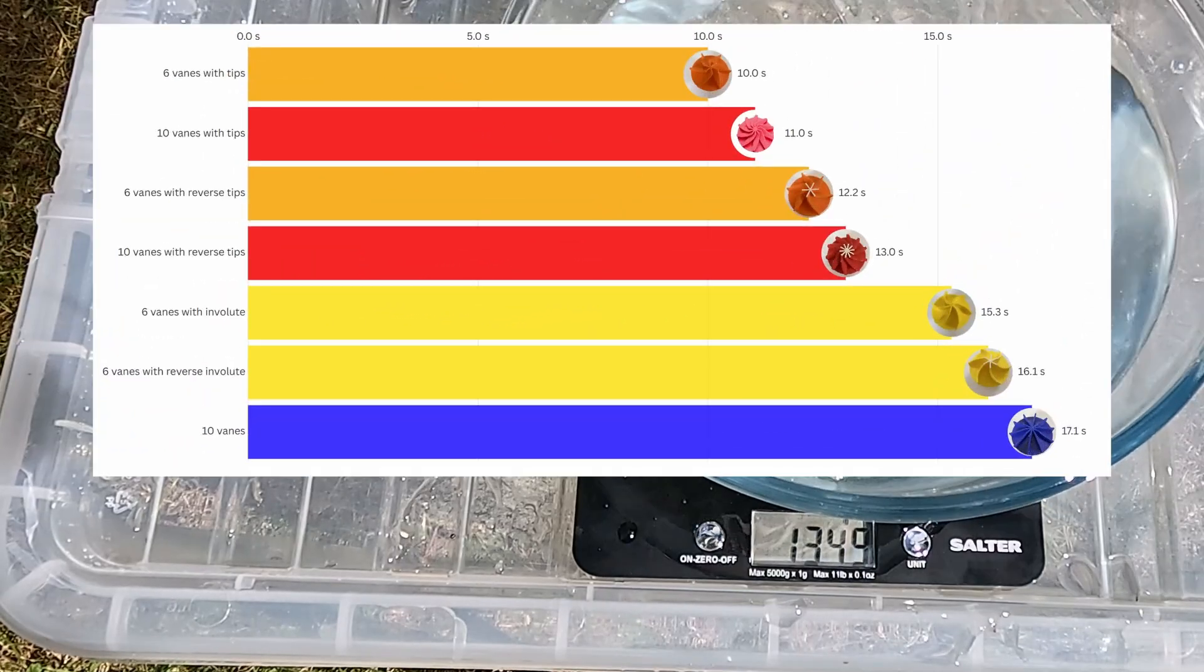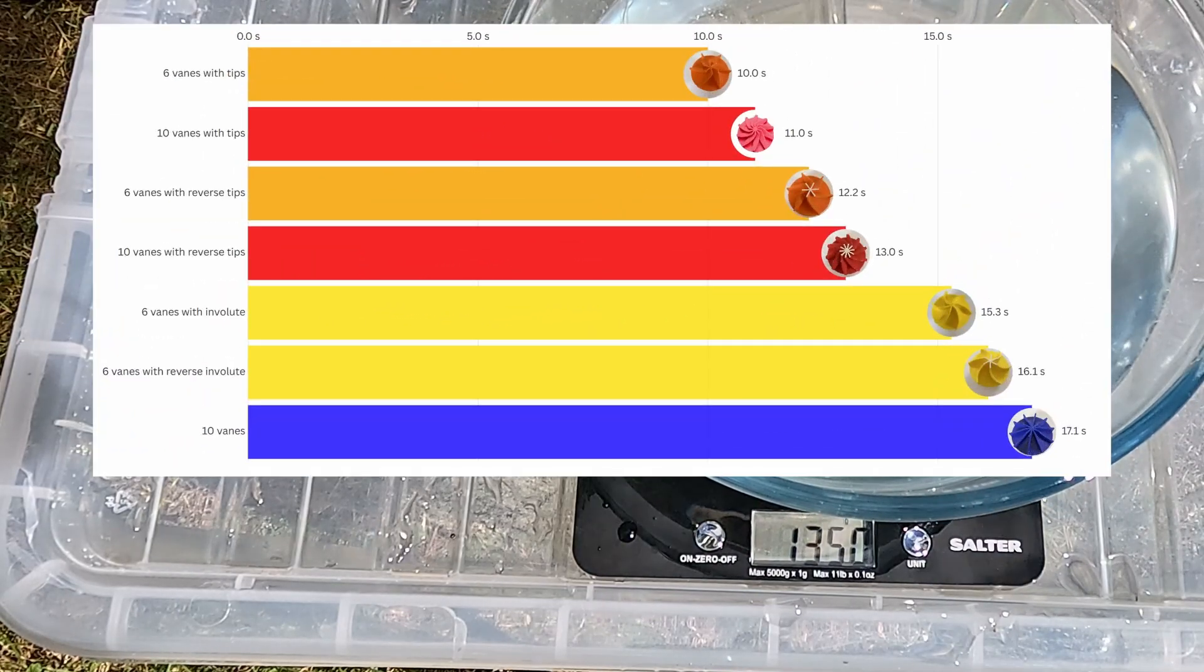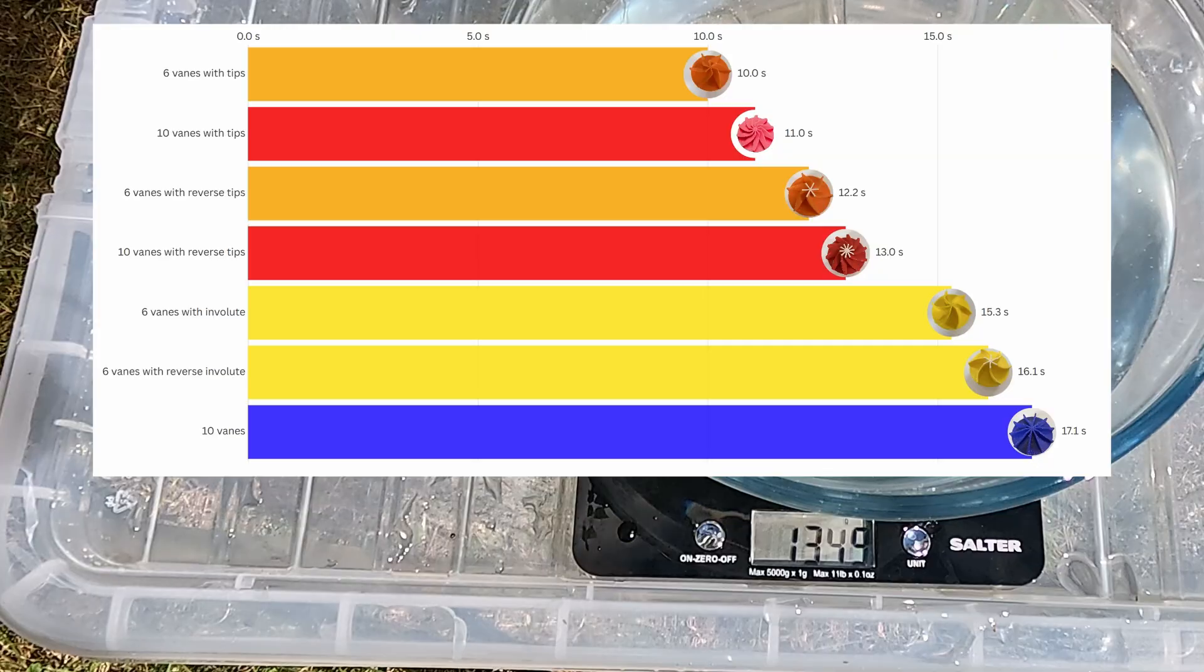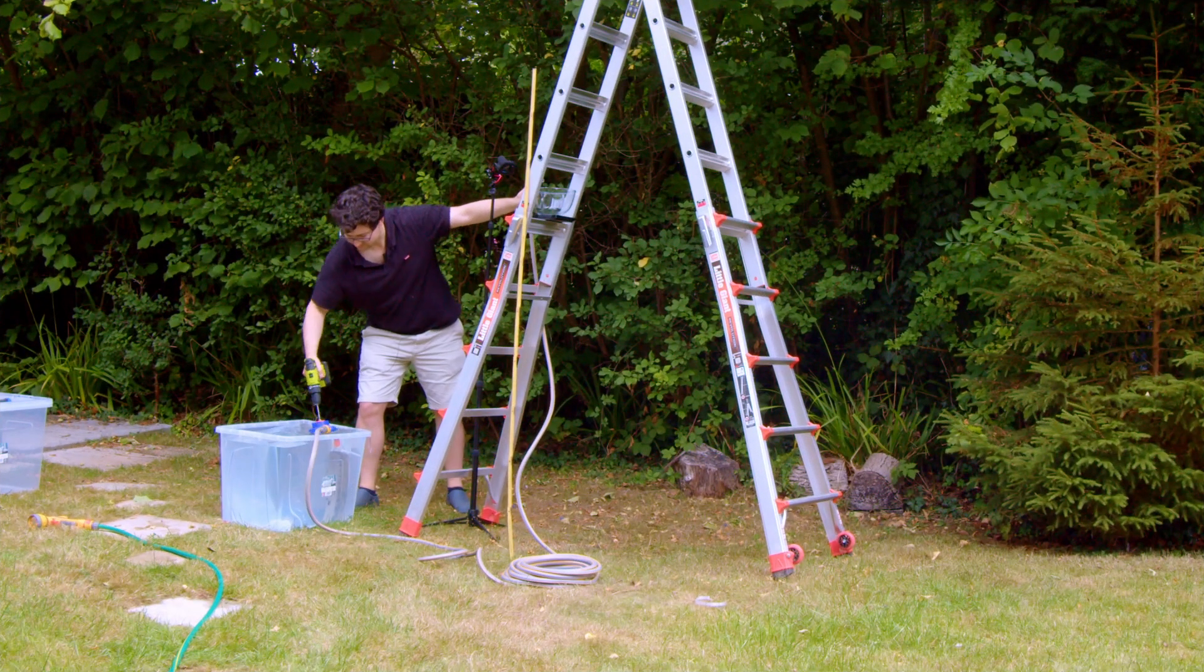So, at the top of the leaderboard, with 10 seconds to pump a liter, it's orange. And right at the bottom of the table, we've got blue with 10 straight veins. If you enjoy the video so far, then don't forget to subscribe, as it really helps out the channel.